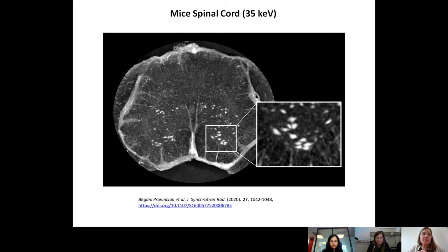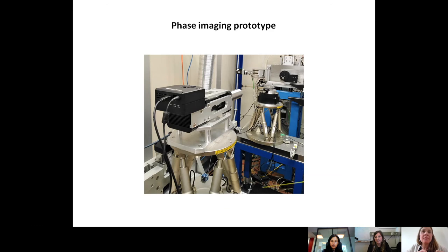So the phase imaging prototype is precisely made for measuring angles with high accuracy. Exactly. I tested — this is an image of the prototype that we use at the synchrotron — and I tested both at the synchrotron and with tabletop sources, and the first results were very encouraging.